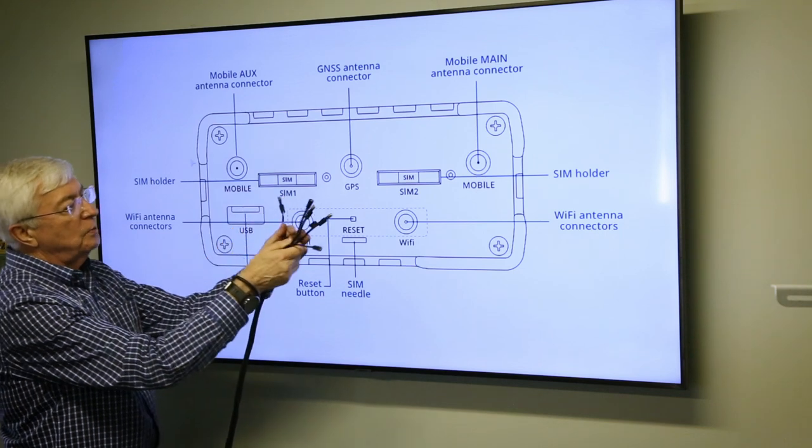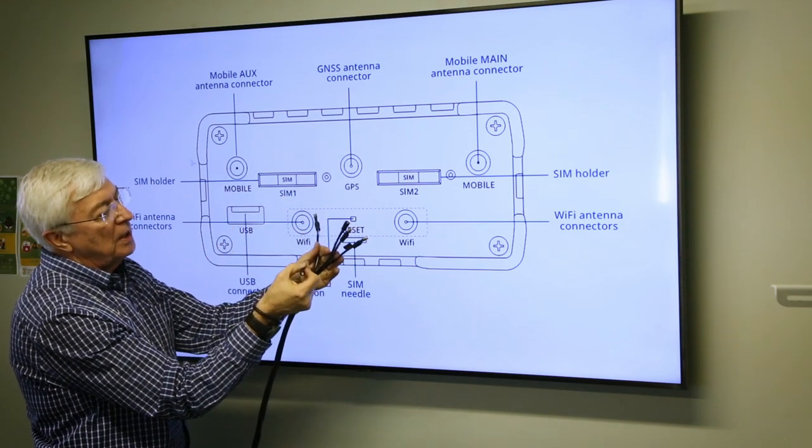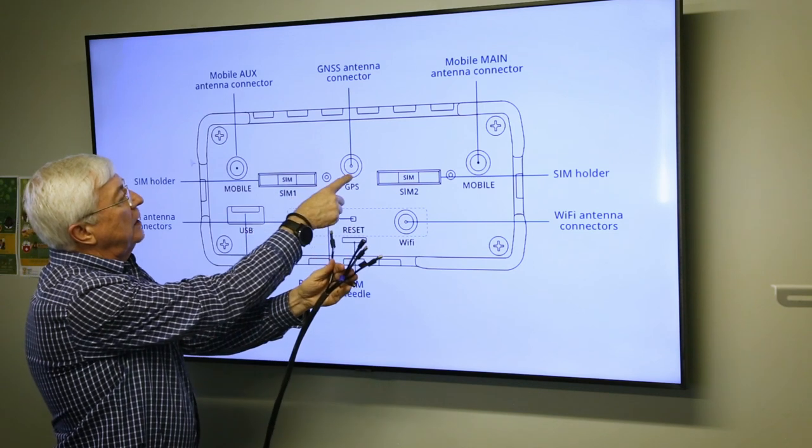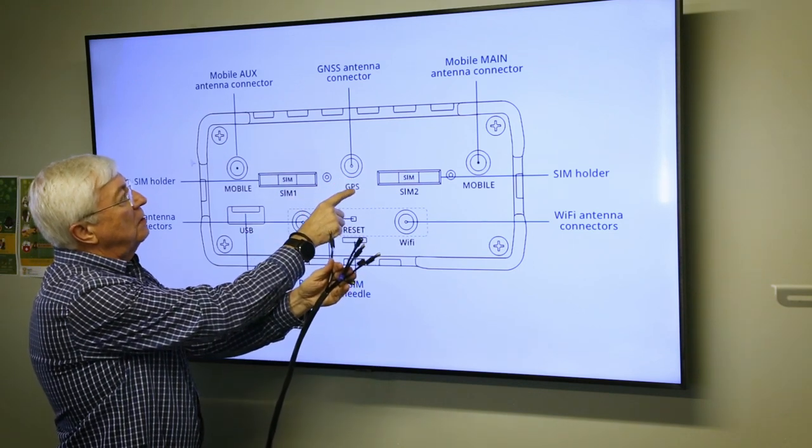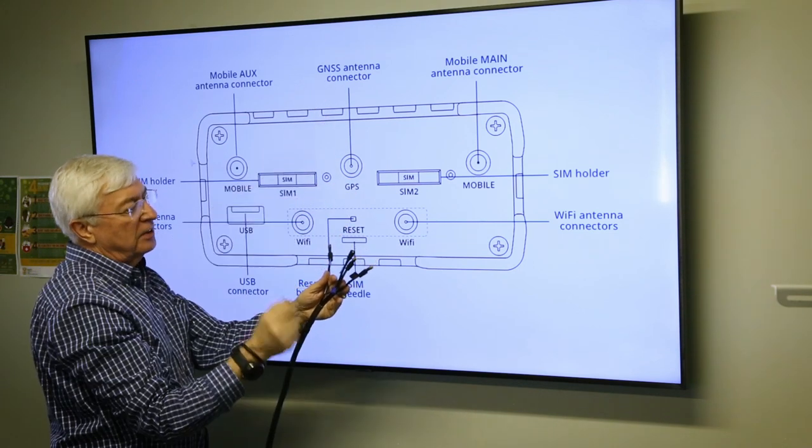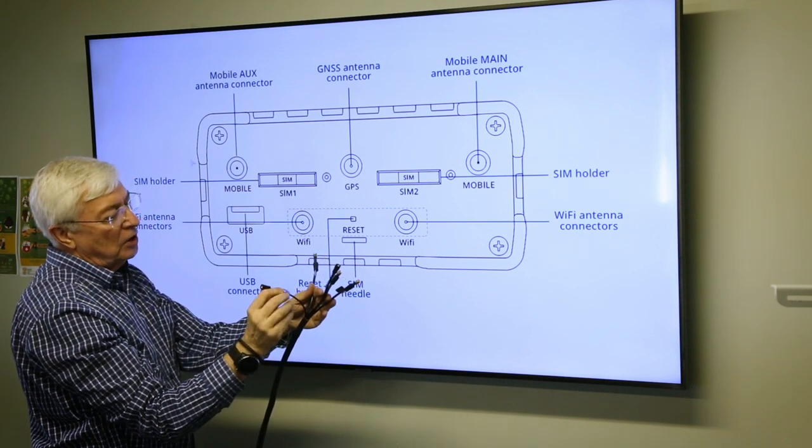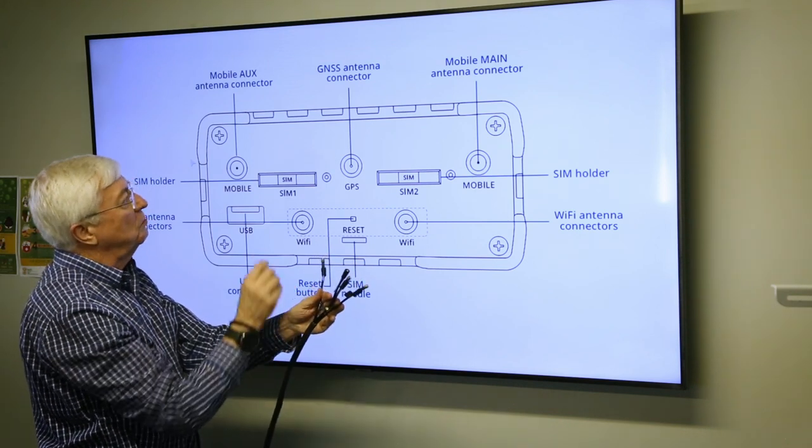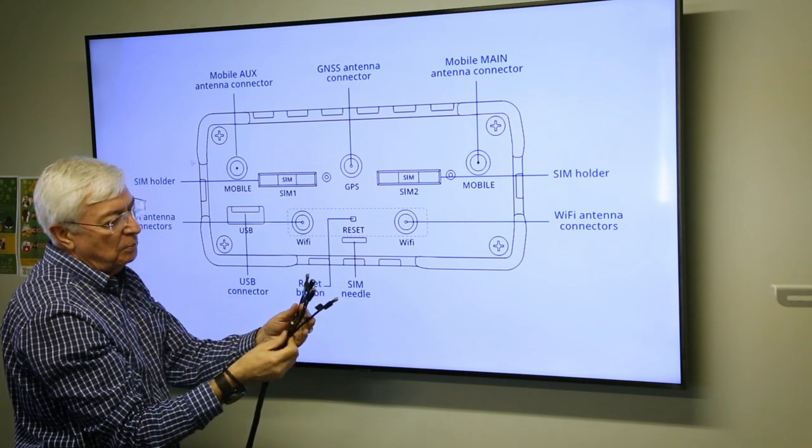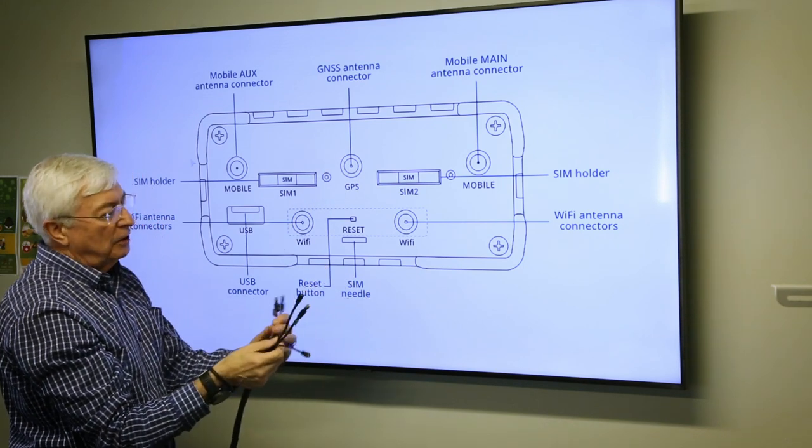Whilst we're at the top, the one that's marked GPS GLONASS will connect to the one that's marked GPS. It's also GNSS, it doesn't matter. The antenna is made for your GPS signal.